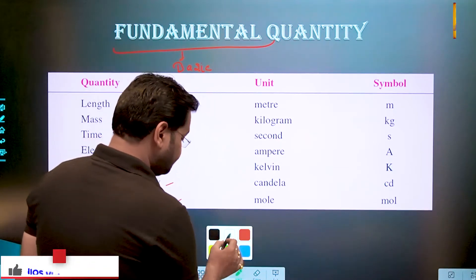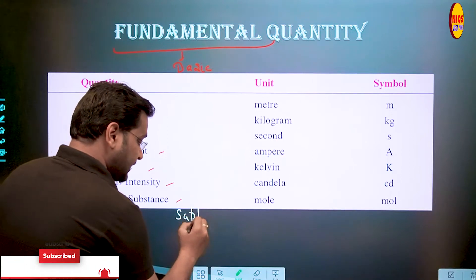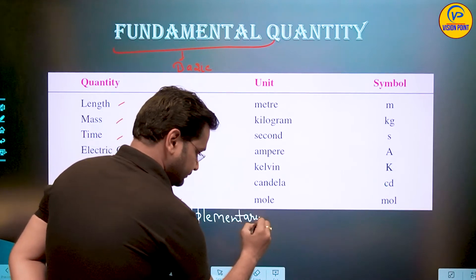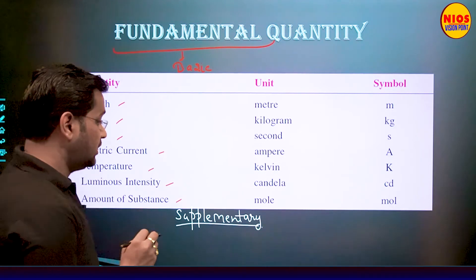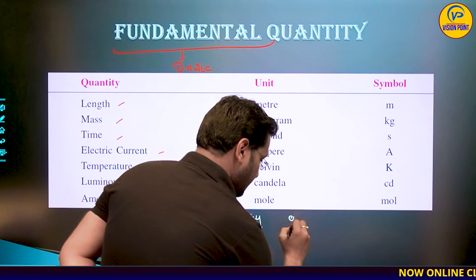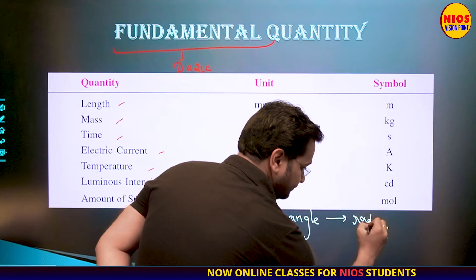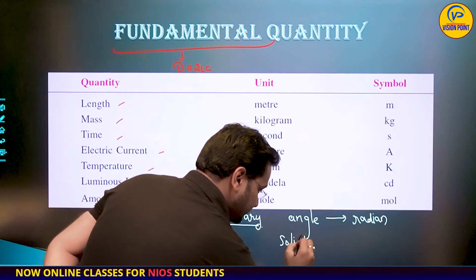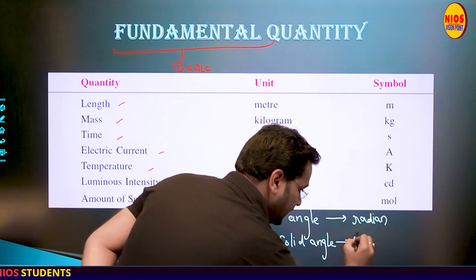इसके अलावा कुछ supplementary quantities भी होती हैं। Supplementary quantities — what are those? There are two: one is angle, जिसकी unit होती है radian, and the other is solid angle, जिसकी unit होती है steradian.